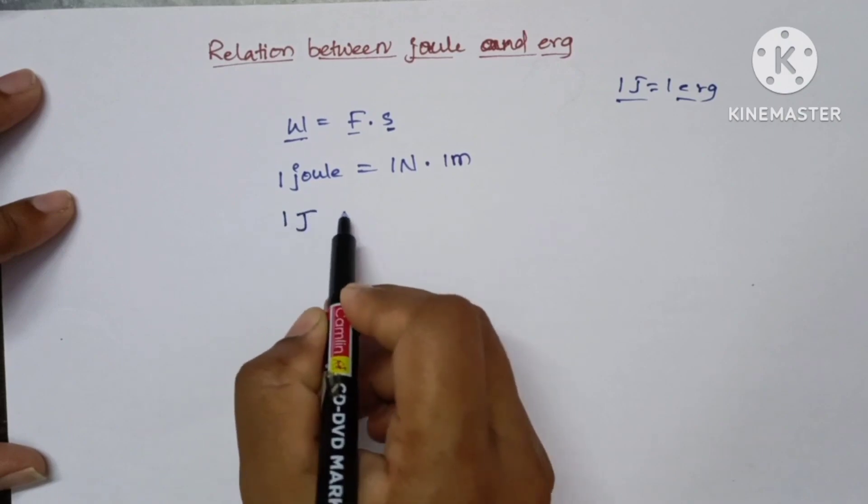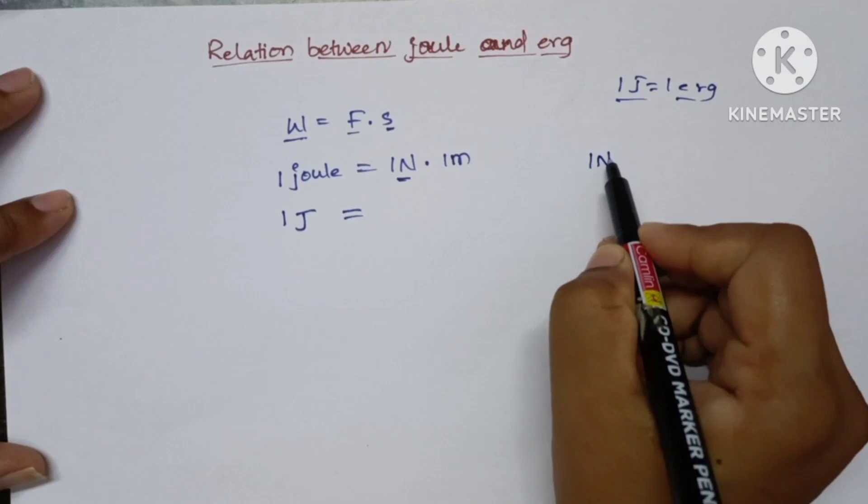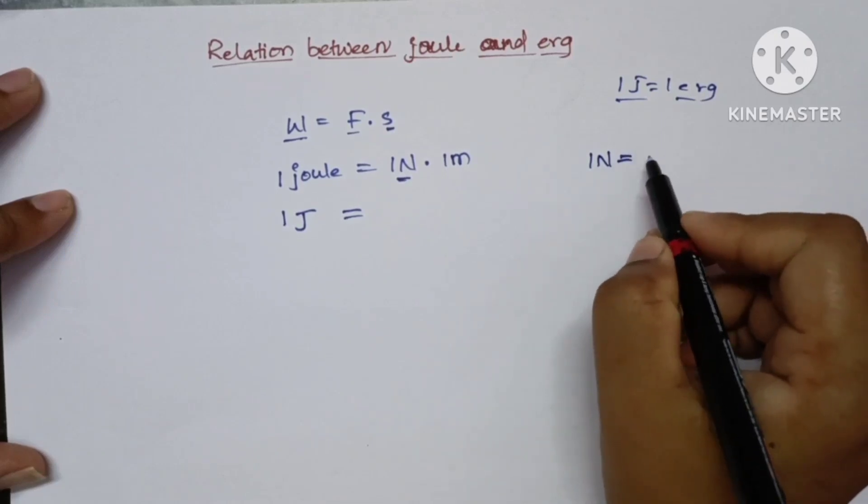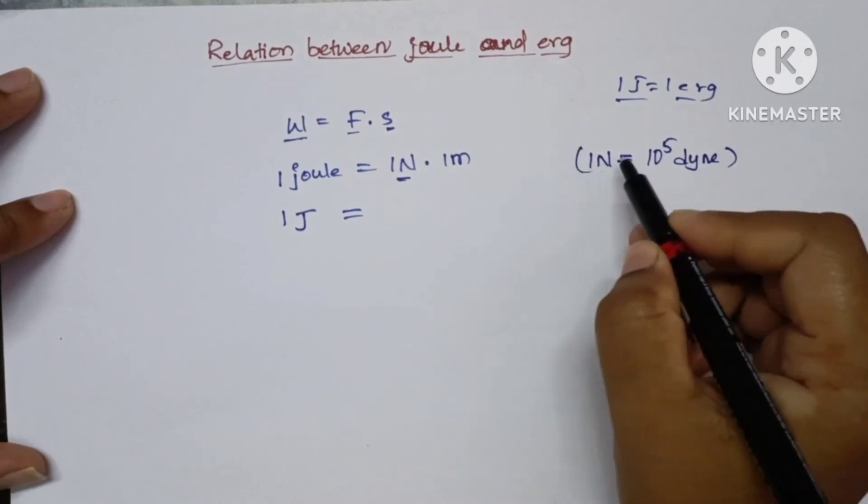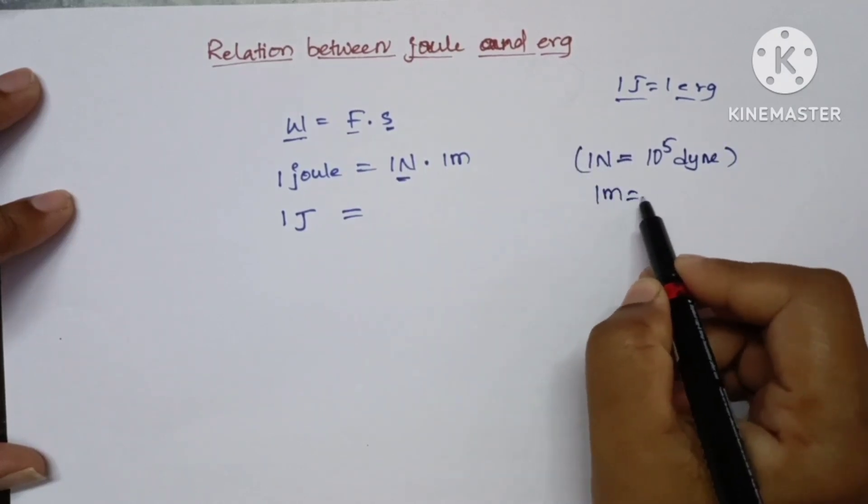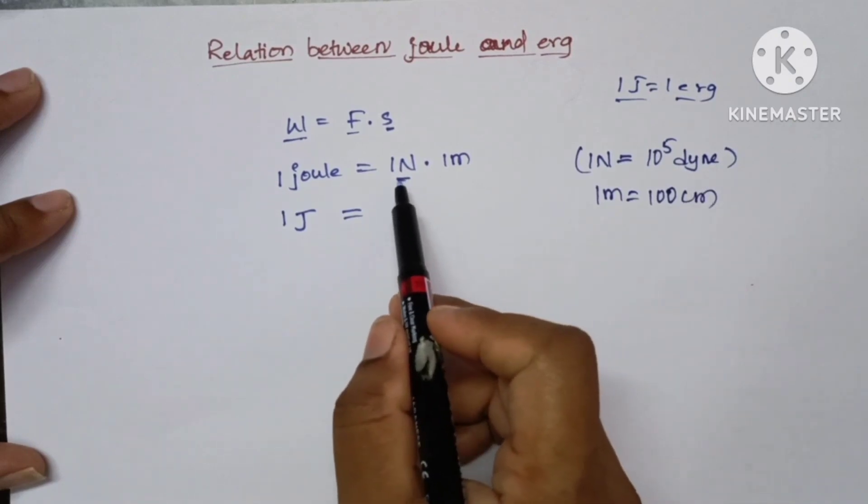1 joule is equal to—now convert this 1 newton into dyne. 1 newton is equal to 10 to the power of 5 dyne. And we know that 1 meter is equal to 100 centimeters, so we are converting this into CGS units.